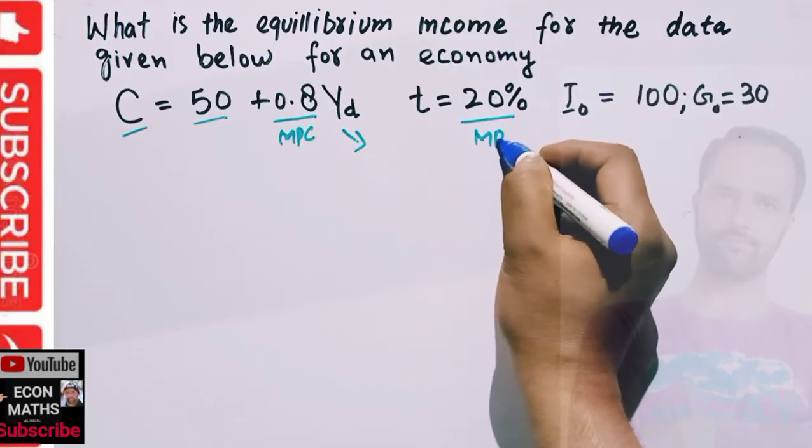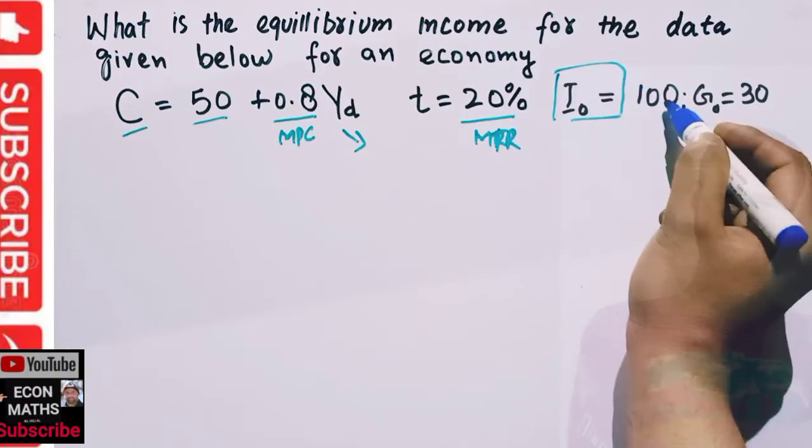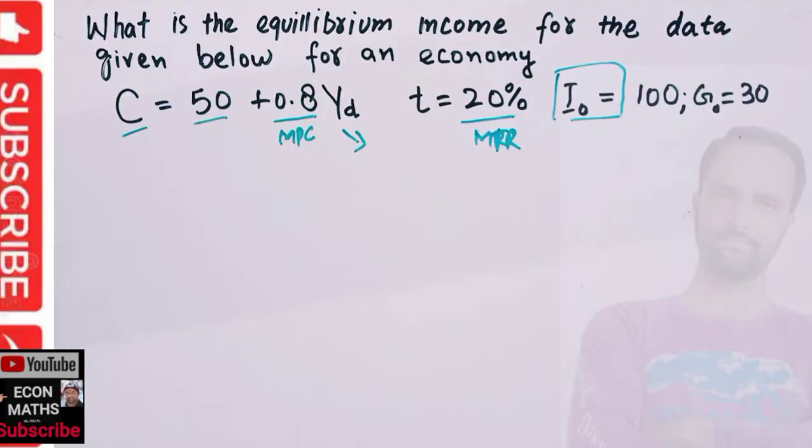We have autonomous investment I_0 = 100 and government expenditure G = 30. We need to find the equilibrium level of income.